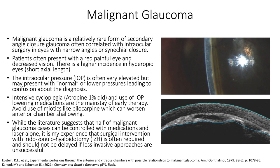The cause of malignant glaucoma or aqueous misdirection is controversial. It is classically thought to be due to posterior misdirection of the aqueous humor with relative block of fluid flow past the lens equator, vitreous face, and ciliary processes. Other factors such as propensity for the choroid to expand and for reduced vitreous fluid conductivity have also been proposed.